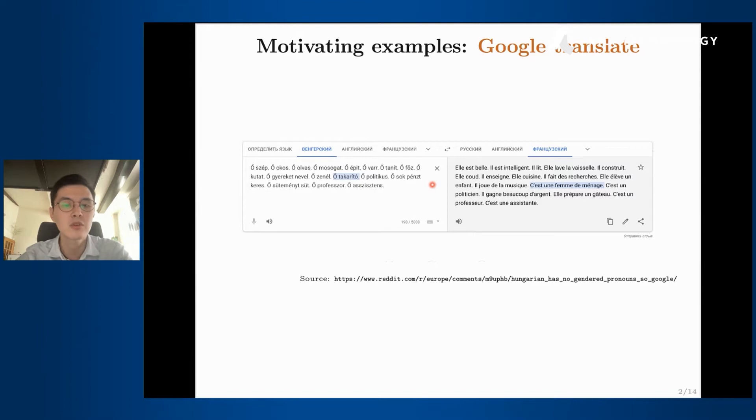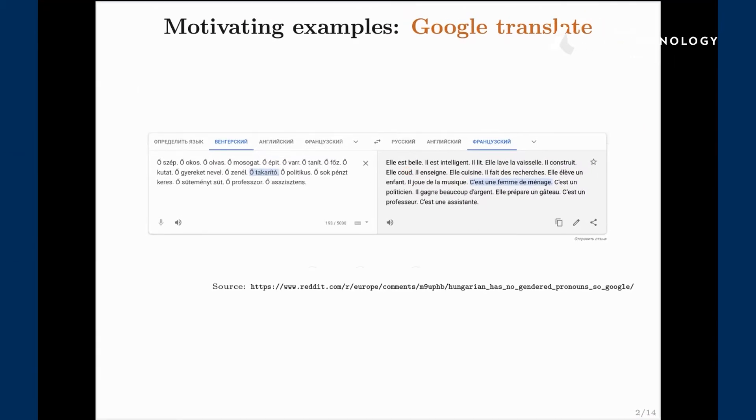We are translating to French where it's possible to say the person is something but it doesn't sound natural, so Google Translate makes a choice of gender. You see that it's she who is beautiful but it is him who is smart. It's she who is the cleaner but he's a politician. He earns a lot of money but she cooks, and so on.